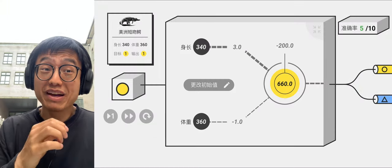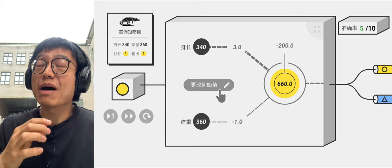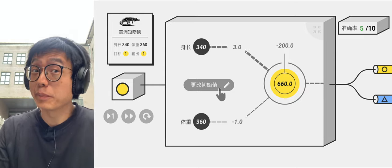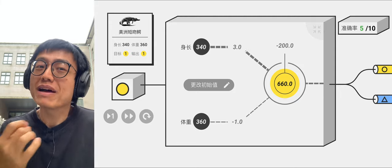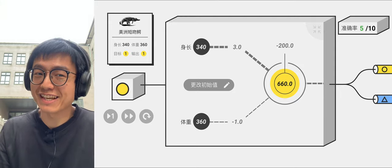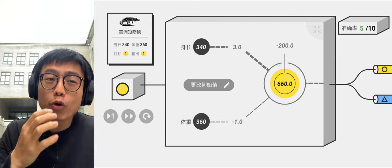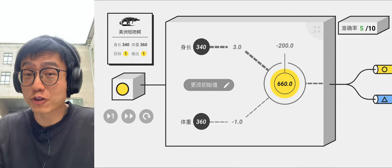Now let me adjust the initial values of W1, W2, and B, and let the machine calculate automatically. We find that no matter what initial parameters we set, our machine can always complete the classification automatically.